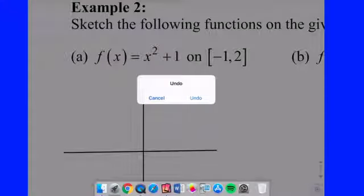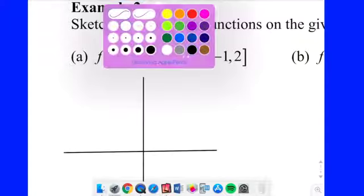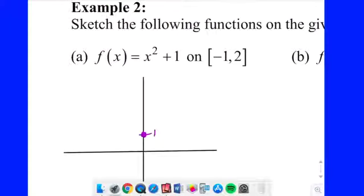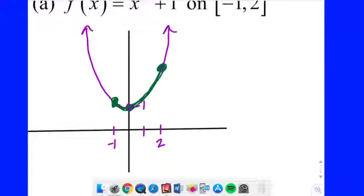X squared plus one. What do we know about that fellow? Yeah, shift it up one and it opens up. We're good. So, looks like that. Now, we're looking only on the interval from negative one, which I'm going to say is right here, to two, which I'll say is right here. So, we're not looking on the entire graph. There's a closed interval. It's specified. And so, we're staying on this little now green section.